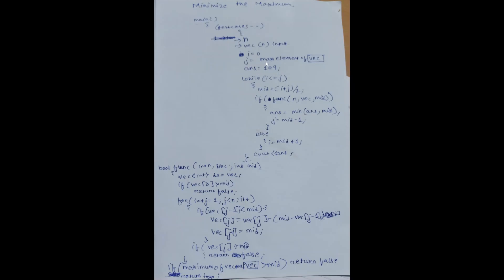Initialize an answer variable to 1e9 as stated in the question. While i is less than or equal to j, we'll do a binary search. We have to find the mid first, that is i plus j by 2. Then we have to check by passing the n, vector, and the mid value that we have found here to this boolean function.